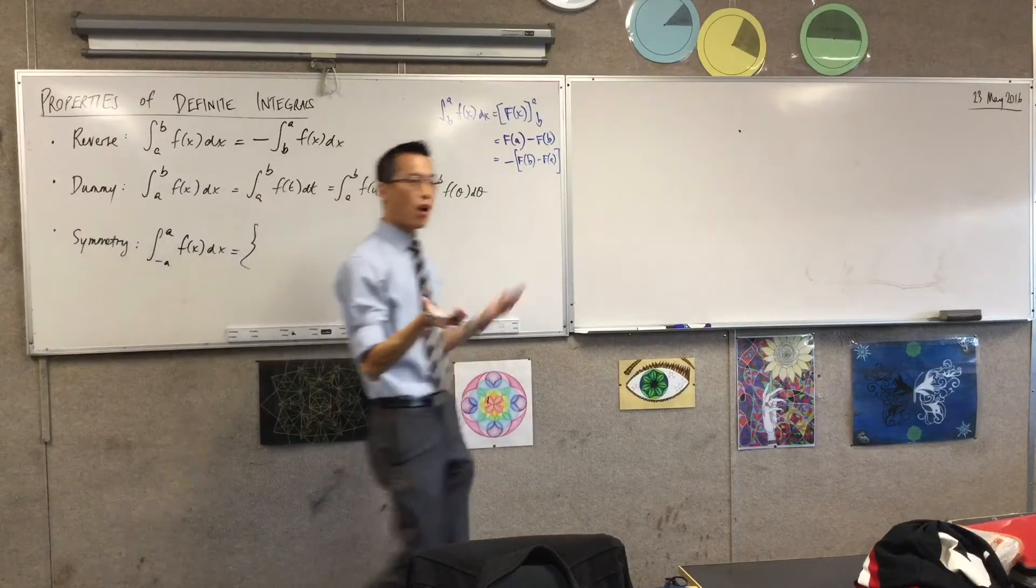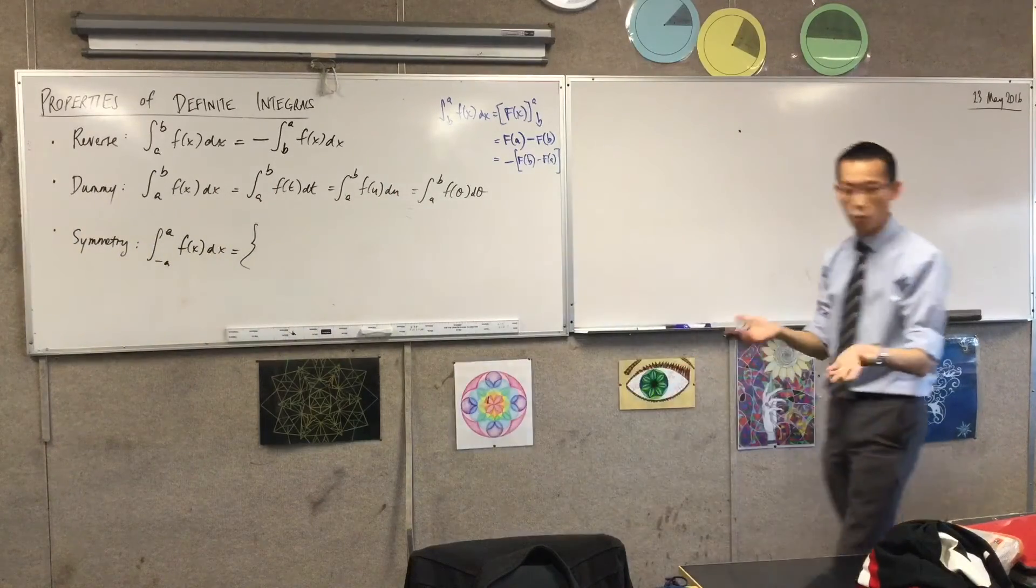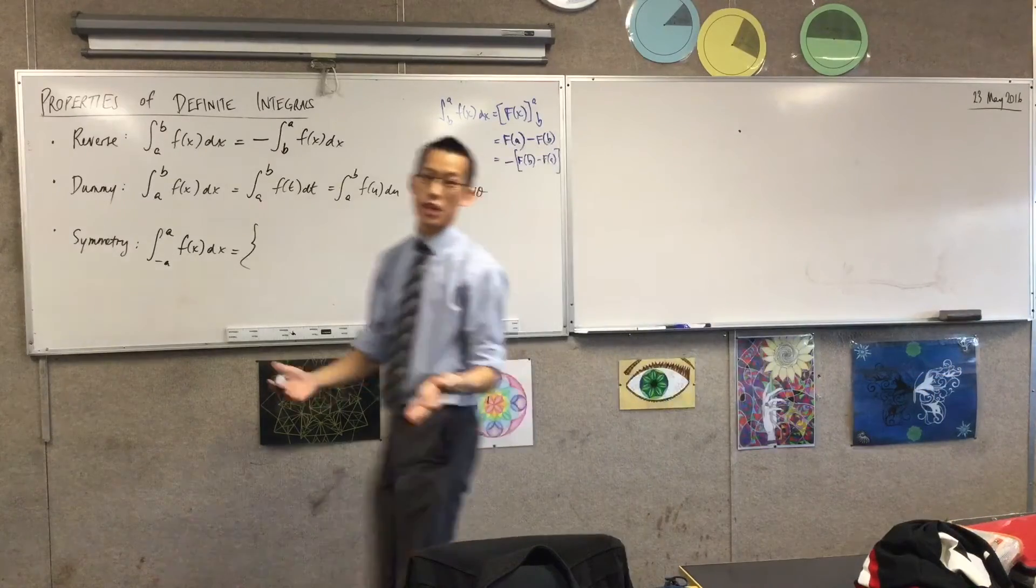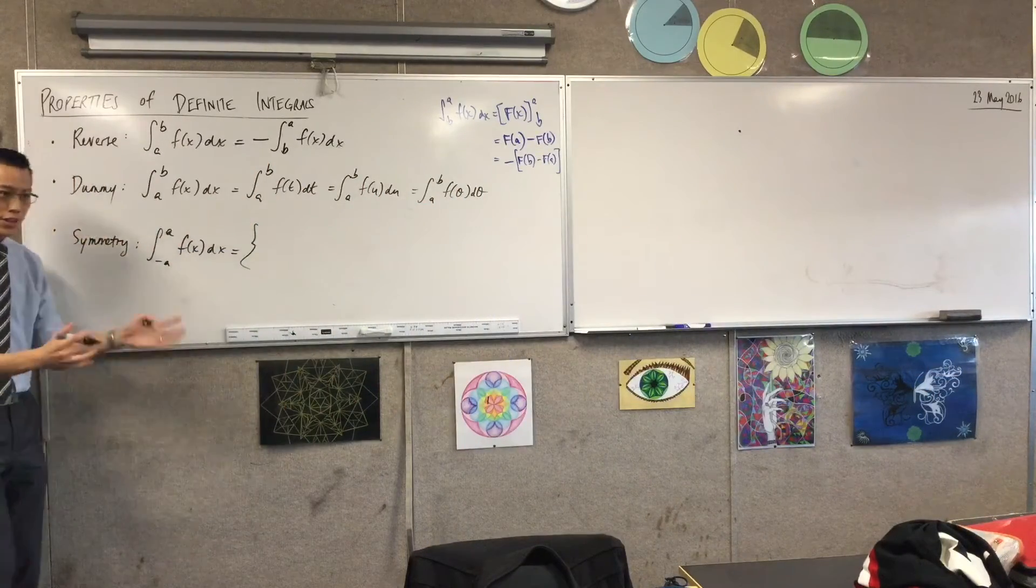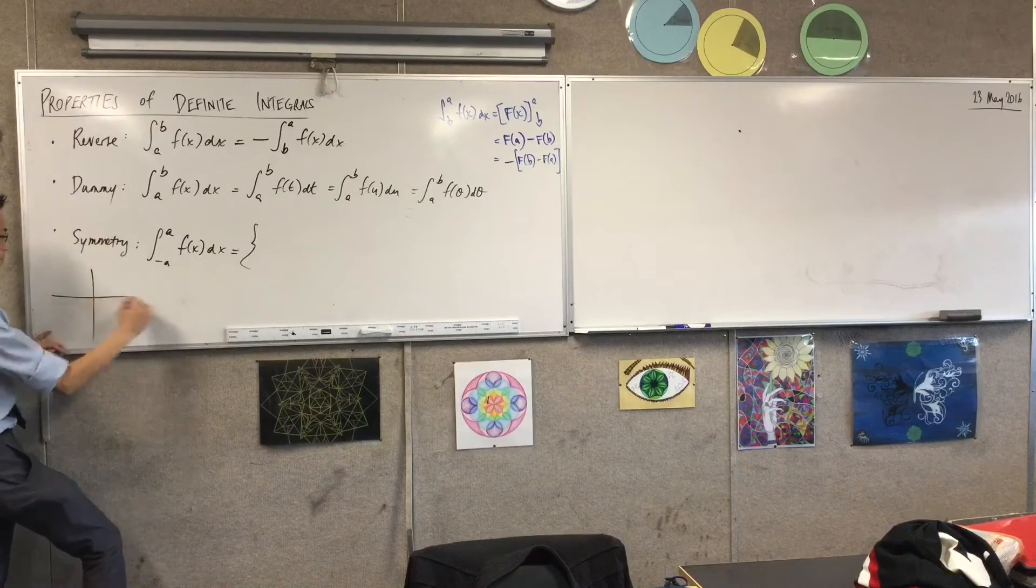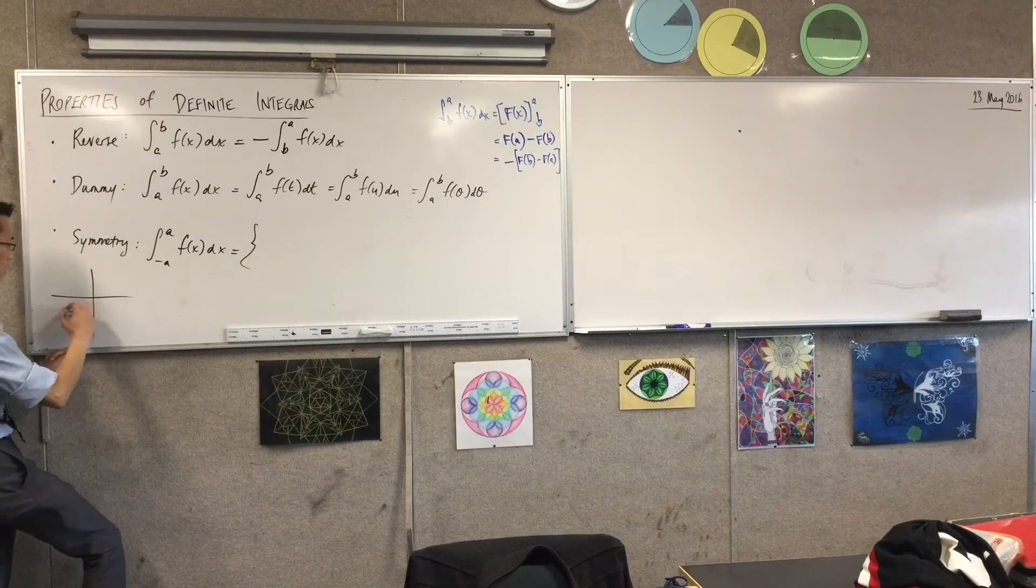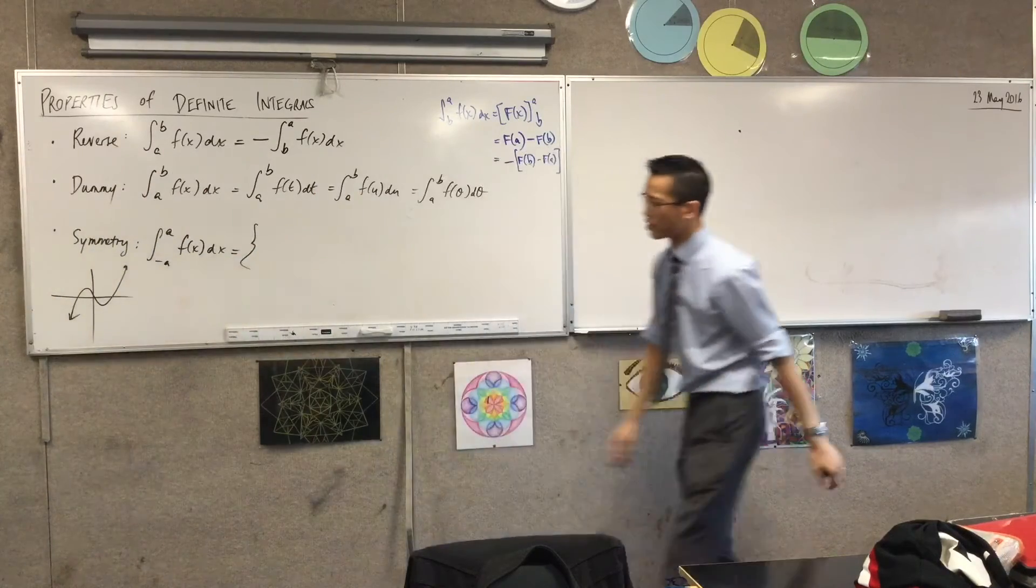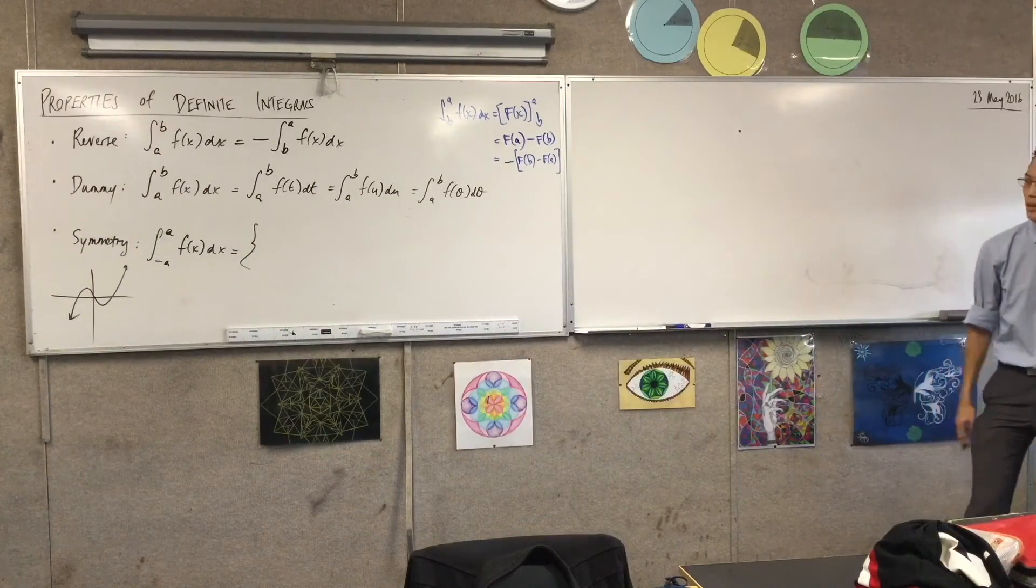So, symmetrical functions, odd and even, symmetrical boundaries, negative a to a. Now, depending on whether you are odd or whether you're even, you will get one of two different things if you're going from negative a to a. Let's think about the odd case first. If you're at the odd case, and we're thinking about, that's something like, here's an odd function. That's x cubed minus x or something like that.